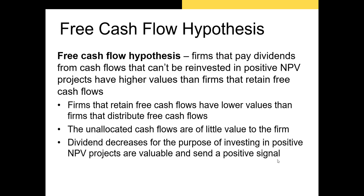The final theory I'll discuss is the free cash flow hypothesis. This states that firms that pay dividends from cash flows that can't be reinvested in positive NPV projects have higher values than firms that retain those same cash flows. Firms that don't pay out excess cash are simply letting that cash go to waste — whereas if it was paid out to shareholders, the shareholders could decide how best to use it. Unlike some other theories, a cut in the dividend under this hypothesis could be seen as a positive signal about the firm's growth prospects, since it means the firm has more positive NPV projects in which to invest. This obviously runs counter to the signaling hypothesis.